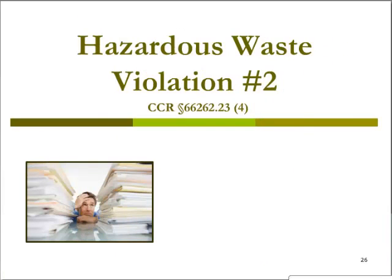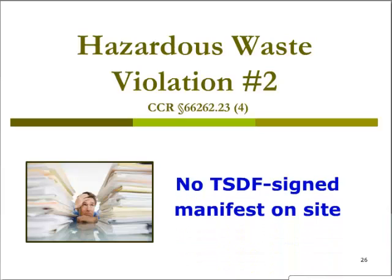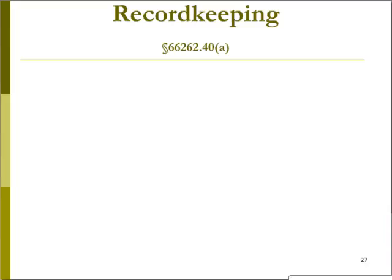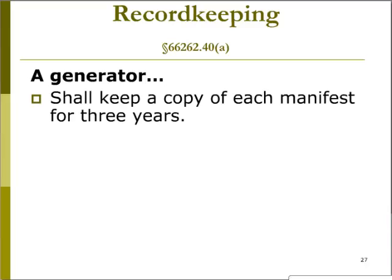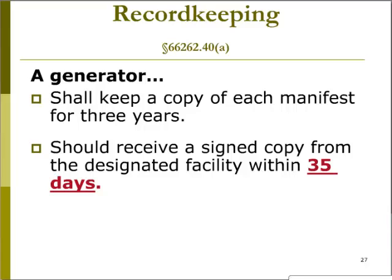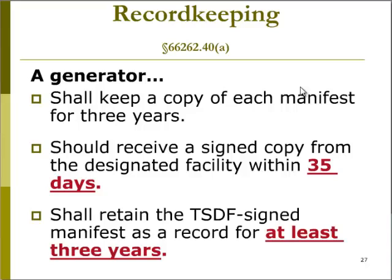Hazardous waste violation number two: a manifest signed by the treatment storage disposal facility must be maintained for three years by the hazardous waste generator. The best way to let your inspector know that the hazardous waste generated at your facility has made it to its final destination is to show the inspector the manifest signed by the TSDF for every waste shipment over the last three years. Record keeping regulations for generators are found in California Code of Regulations Chapter 12, Section 66262.40A, which states that a hazardous waste generator must keep a copy of each manifest for three years. Once the generator receives the signed manifest back from the TSDF — which should take no longer than 35 days from the shipment date — the TSDF-signed copy must be kept for three years.